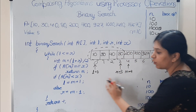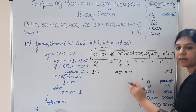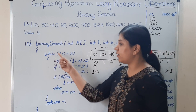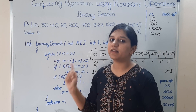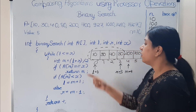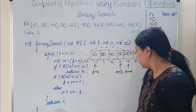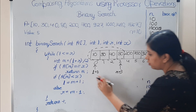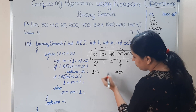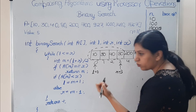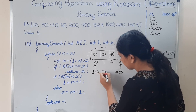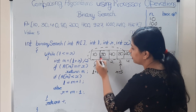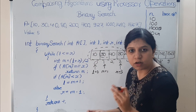We enter the loop again because 0 <= 3. We find the new middle element: m = (0 + 3) / 2 = 1. We compare a[1] = 30 with x = 5. 30 is greater than 5.